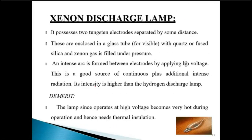Next is the xenon discharge lamp. It possesses two tungsten electrodes separated by some distance. Again, you have a similar kind of arrangement, but here specifically the material of the electrode is tungsten. These are enclosed in a glass tube for visible use, and with a quartz tube or fused silica for UV use. Xenon gas is filled under pressure.